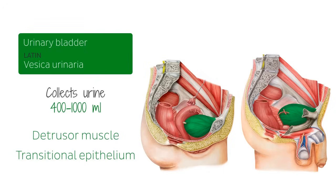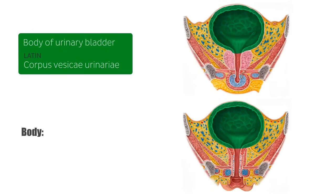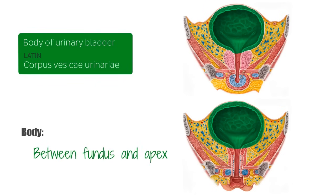The body of the urinary bladder, shown here in a male pelvis on top and in a female pelvis below, is the portion of the bladder situated between the fundus and the apex. The fundus is the inferior posterior surface or base, while the apex is the anterior aspect located towards the pubic symphysis.